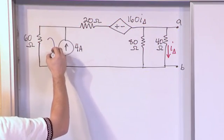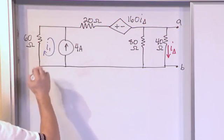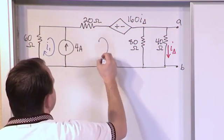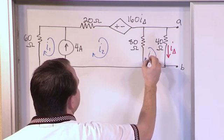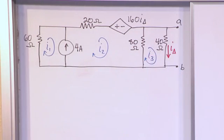Alright, so to get started, let's go ahead and define our meshes. There's mesh 1 I sub 1, here is mesh I sub 2, here is mesh I sub 3. So there's only three meshes, it's not too bad.